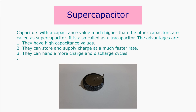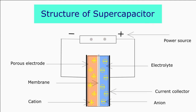Capacitors with capacitance values much higher than other capacitors are called supercapacitors, also known as ultracapacitors. Their main advantages are: they have high capacitance values, they can store and supply charge at a much faster rate, and they can handle more charge and discharge cycles. These capacitors are used in buses, trains, elevators, cranes, etc., and also in regenerative braking systems and memory backup.